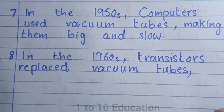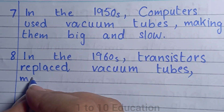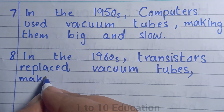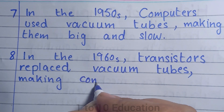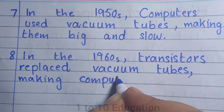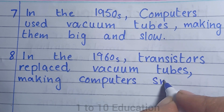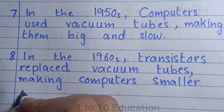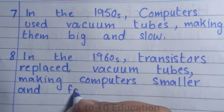In the 1960s, transistors replaced vacuum tubes, making computers smaller and faster.